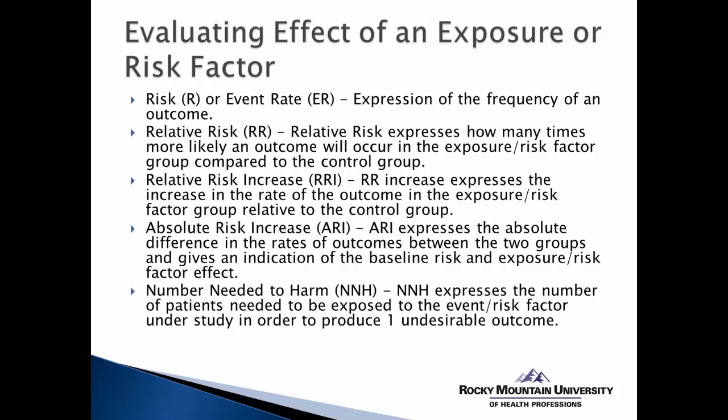The next measure is relative risk, which expresses how many times more likely an outcome will occur in the exposure group — the experimental group — compared to the control group. We use 1.0 as the relative risk baseline. A relative risk of 1.0 means the control group is just as likely as the experimental group to have the negative outcome. As that value changes, it indicates more risk in one group versus the other.